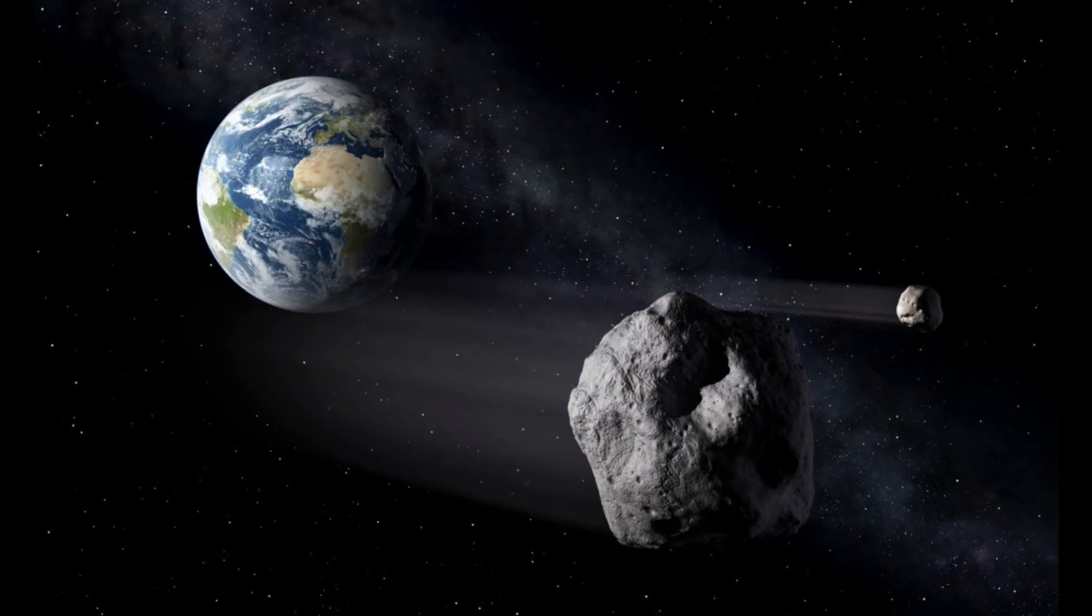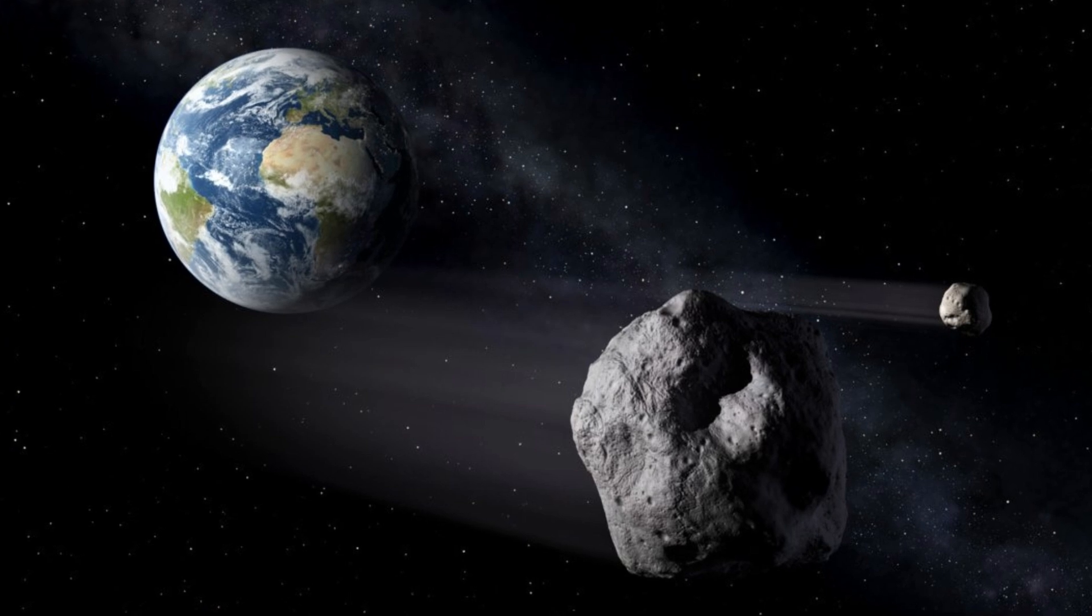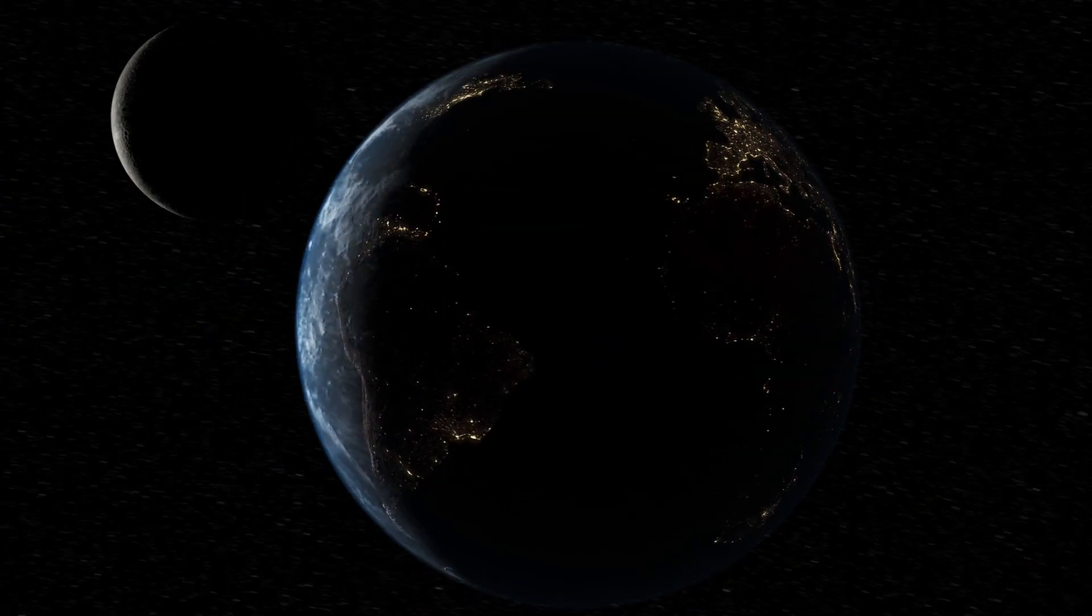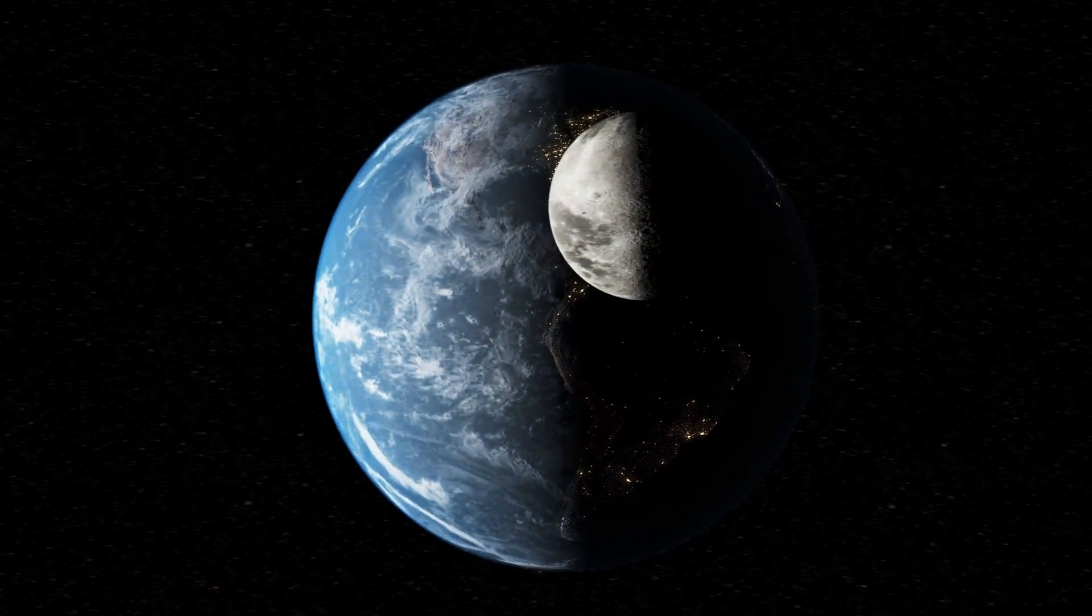Mini-moons are different from our moon in many ways. They're small, ranging in size from a basketball to a car. They don't stay put, just temporarily trapped by Earth's gravity, then released again.